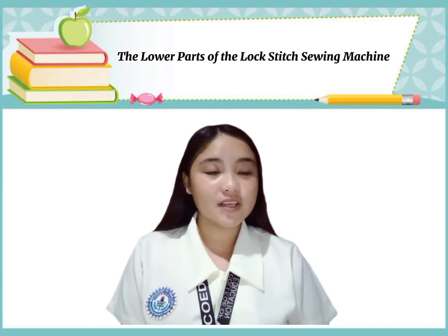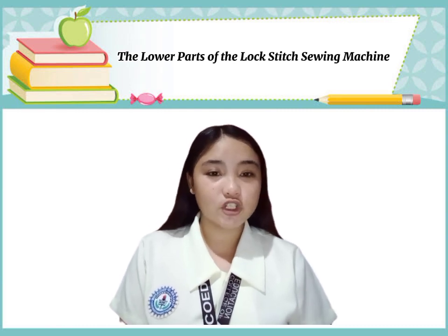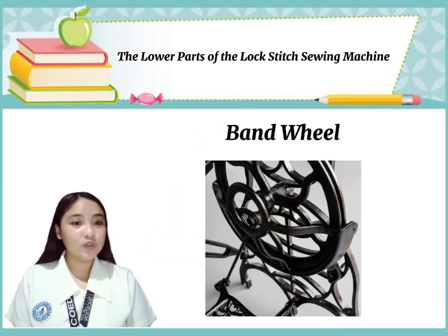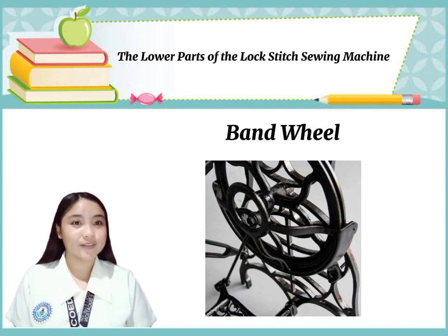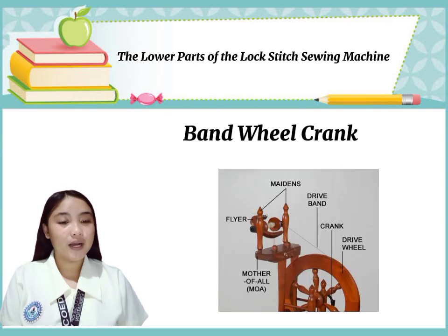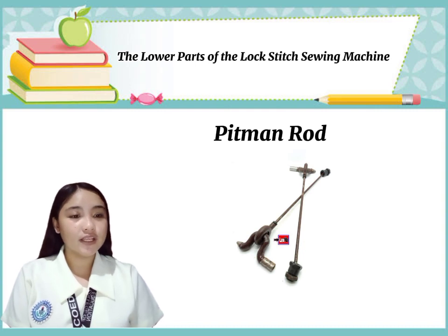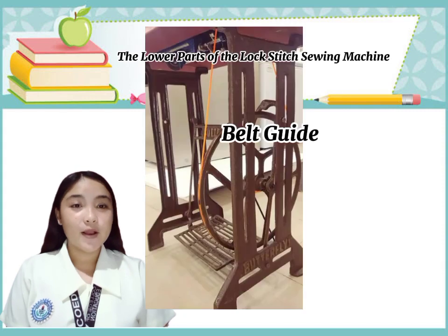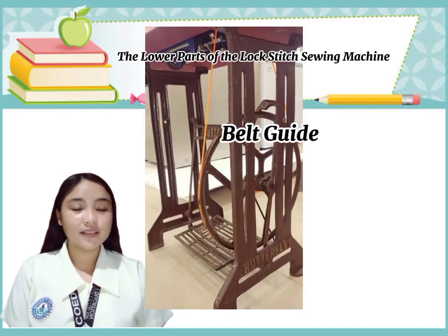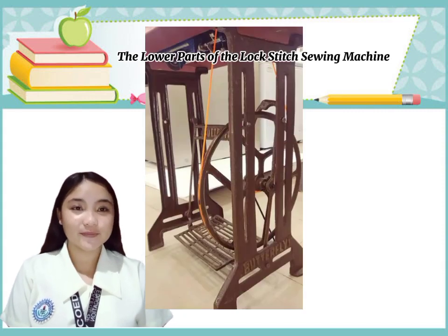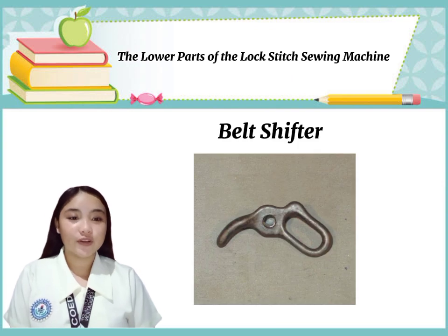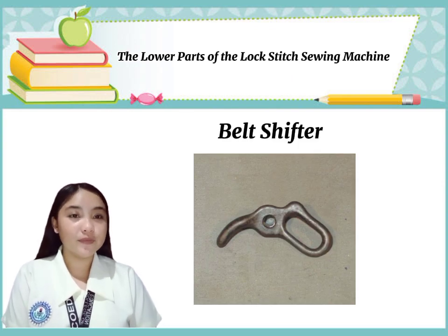The lower parts of the lap stitch sewing machine: first, band wheel — leads the balance wheel through the belt connection. Second, band wheel crank — moves the band wheel. Third, pitman rod — holds the treadle to the band wheel crank. Fourth, belt guide — holds the belt to its place. Fifth, belt shifter — removes the belt from the wheel.